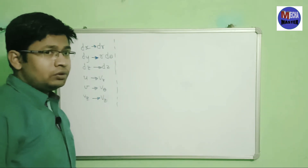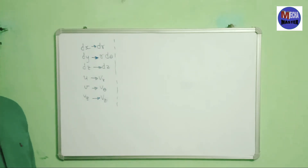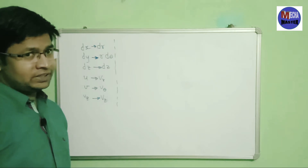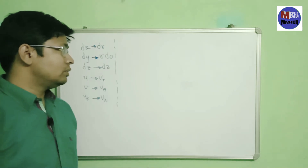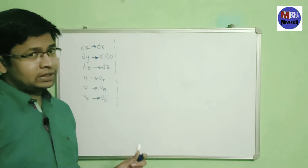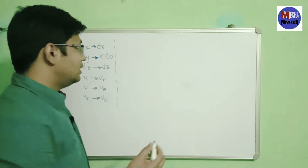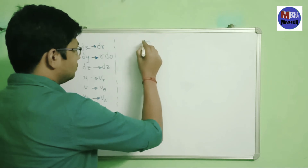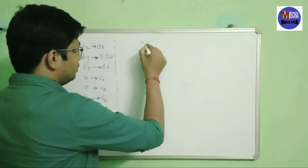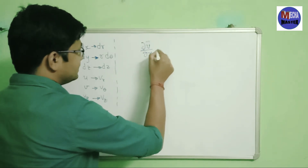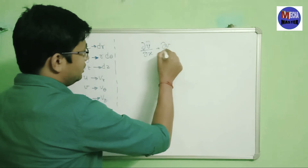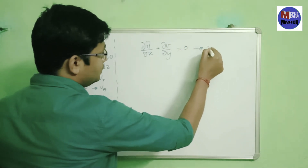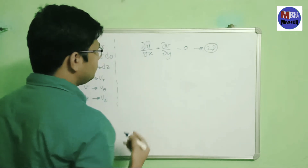Now I will tell you how you can easily apply this in fluid mechanics. The most important equation is the continuity equation. First I will write it in the Cartesian coordinate system. For 2D, it is: del u upon del x plus del v upon del y equals to zero.